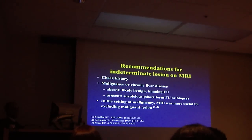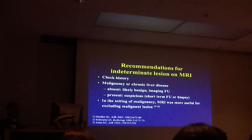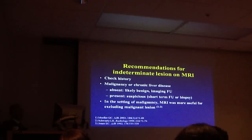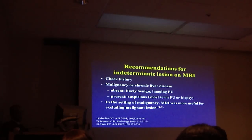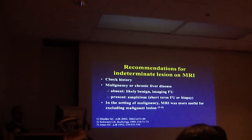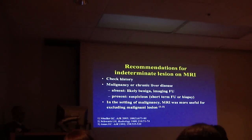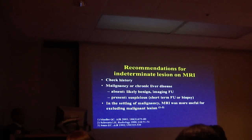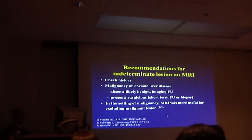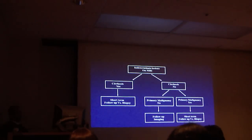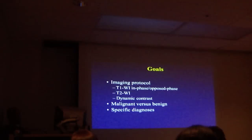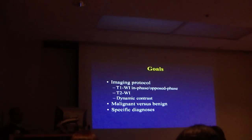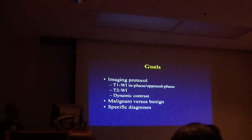Recommendations for indeterminate lesions on MRI: not every lesion has read the book. Check history — malignancy or chronic liver disease. If absent, likely benign; you can follow up with anything. If history is present, it is suspicious — do short-term follow-up or biopsy. In the setting of malignancy, MRI will be more useful for excluding malignant lesions. We discussed imaging protocol, imaging sequences, malignant versus benign features, and specific diagnosis.